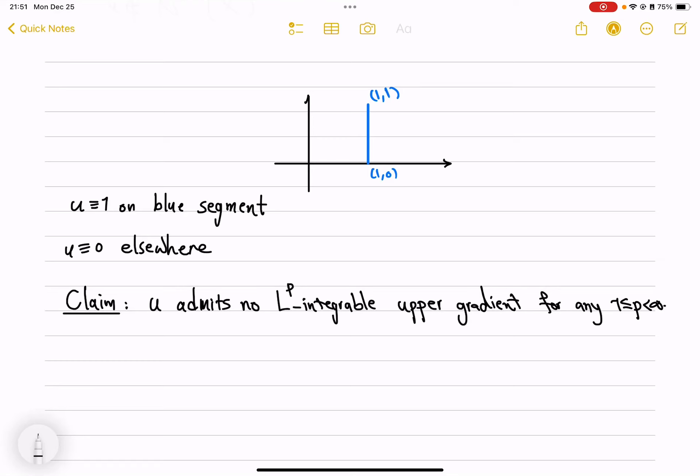After doing the previous video where I attempted to prove the following claim: if you have a function on the plane which is only equal to one along one line segment here, the blue line,